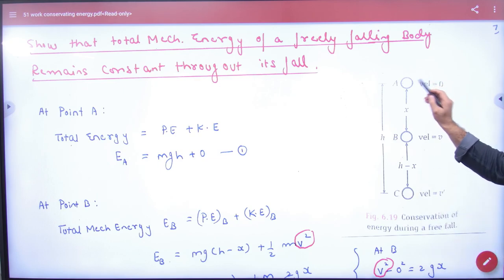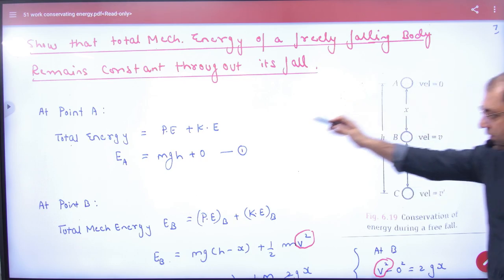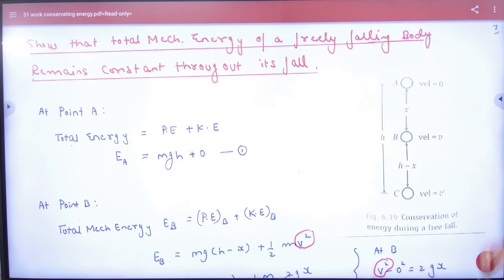So what is total energy here? Sum of potential and kinetic. What is the potential? mgh. Kinetic is zero. What is the potential? mg into h minus x. mg into h minus x. Kinetic, velocity of v.